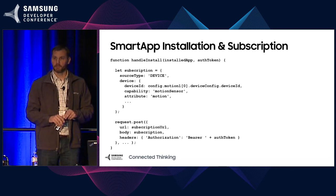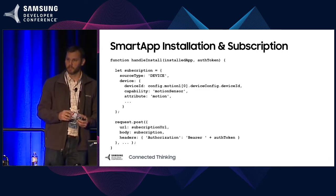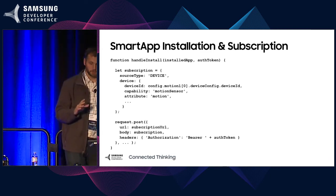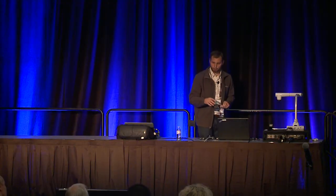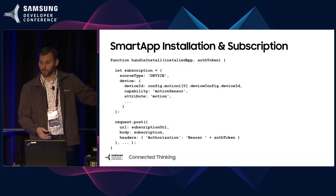If anybody has questions, ask them right away — this will be more fun as a discussion. Coming back to capabilities: the subscription is for the motion detector, for the capability of motion sensor, looking just for the attribute of motion. For a different app like a battery minder — 'let me know when the battery of my devices is getting low' — the install handler looks very similar, except the capability would say battery and the attribute would be battery level. The full list of capabilities can be found at docs.smartthings.com, and the new API documentation will be at developer.samsung.com.